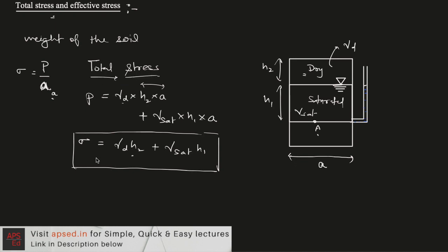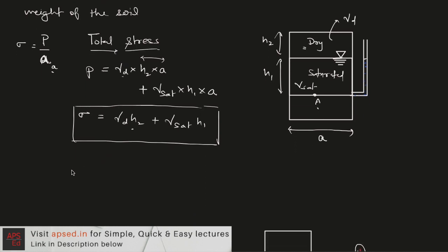Now this total stress has two components. Total stress is given as the summation of effective stress and pore pressure. Let's understand them one by one.